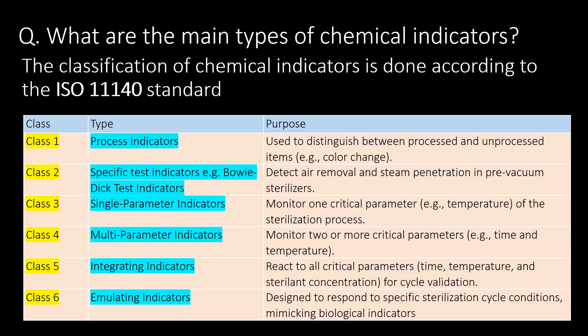What are the main types of chemical indicators? The classification of chemical indicators is done according to the ISO 11140 standard as follows: Class 1 process indicators; Class 2 specific test indicators, example Bowie-Dick test indicator; Class 3 single parameter indicators; Class 4 multi-parameter indicators; Class 5 integrating indicators; and Class 6 emulating indicators.